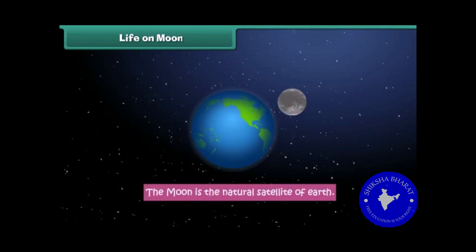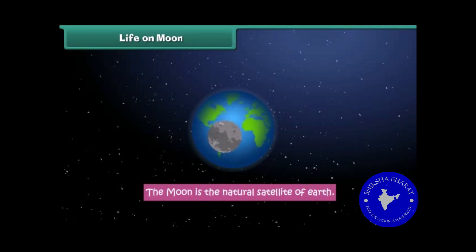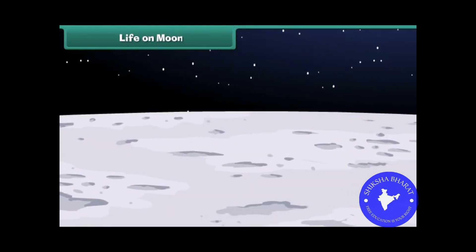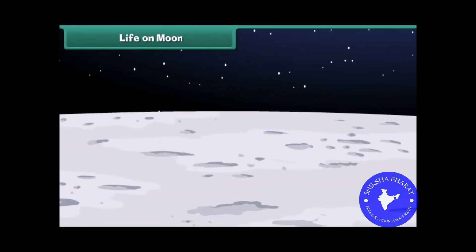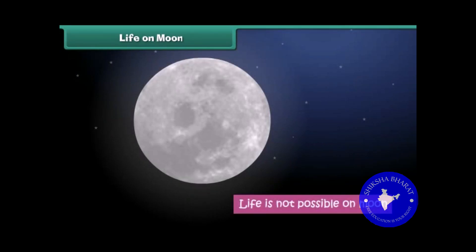Though the Moon is the natural satellite of Earth, it is very different from Earth. There is no air, water, or food on the Moon, therefore life is not possible on it.